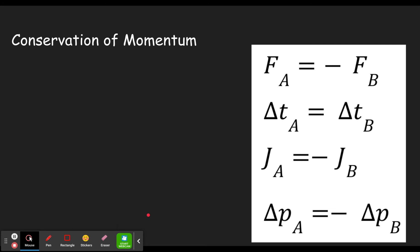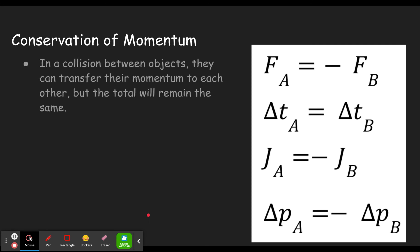All of that ties into today where we want to talk about conservation of momentum. In a collision between objects, they can transfer momentum to each other, but the total momentum will remain the same. When two things hit, if they had momentum to begin with, they will have the same total momentum at the end of that collision. It's just that one of them might have lost momentum, and whatever momentum they lost, the other one gained.